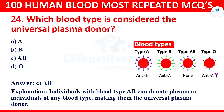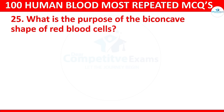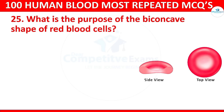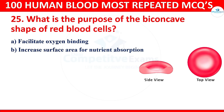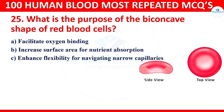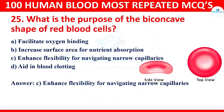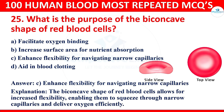Question 25: What is the purpose of the biconcave shape of red blood cells? Options: facilitate oxygen binding, increase surface area for nutrient absorption, enhance flexibility for navigating narrow capillaries, or aid in blood clotting. The correct answer is enhance flexibility for navigating narrow capillaries. The biconcave shape allows for increased flexibility, enabling red blood cells to squeeze through narrow capillaries and deliver oxygen efficiently.